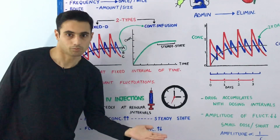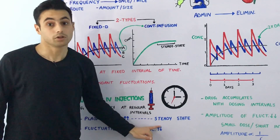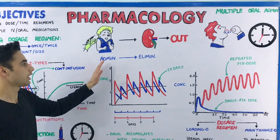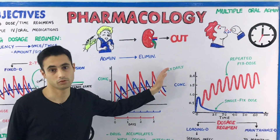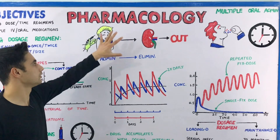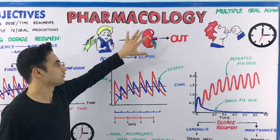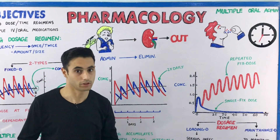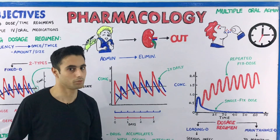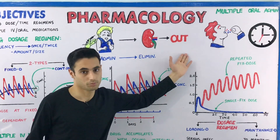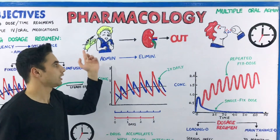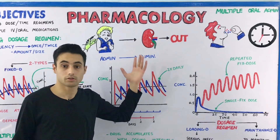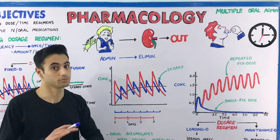The plasma concentration is time-dependent, fluctuating between the extremes and the mean until steady state is achieved. At steady state, the rate of drug administration equals the rate of drug elimination. The kidney is the major eliminating organ; it clears the drug from the body. When these rates are equal, the concentration of the medication in plasma is constant.